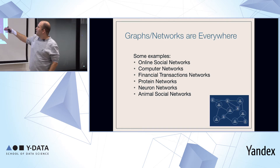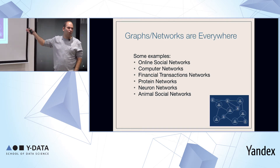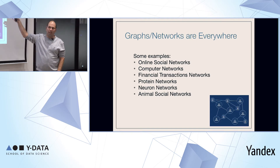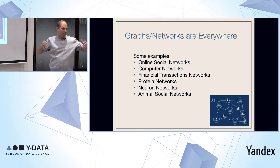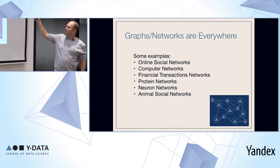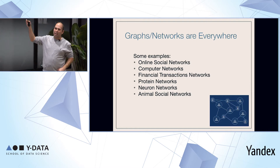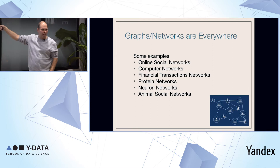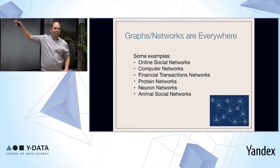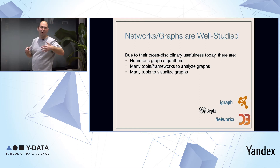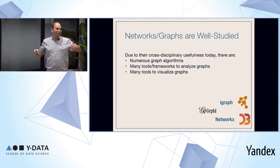So where are networks? Think about Facebook — Facebook is a social network. Each node is a person, connected to other users in the network. We have computer networks, computers connected to each other. Financial transactions — Bitcoin is a network. A protein network is biology. Neural networks are the brain. We even have social networks in animals. And for each one of those examples, you have data online that you can play with. So in order to play with the data, you need tools.